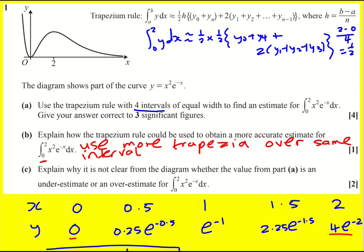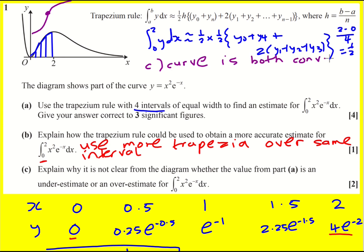Now explain why it's not clear from the diagram whether the value from part A is an underestimate or overestimate. Let's draw on a diagram — I've split it into four. For two of the trapezia they're slightly below the curve, but for the other two they're slightly above the curve. You could say the curve has a point of inflection, because it is increasing and then decreasing — there's a point where it changes from being convex to concave. So the curve is both convex and concave.